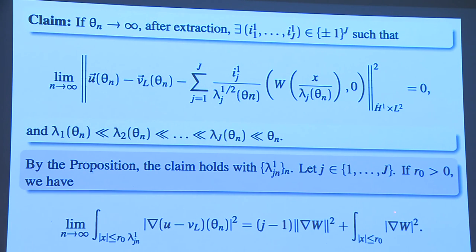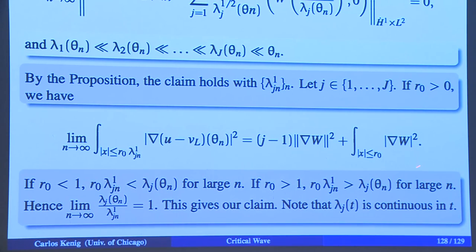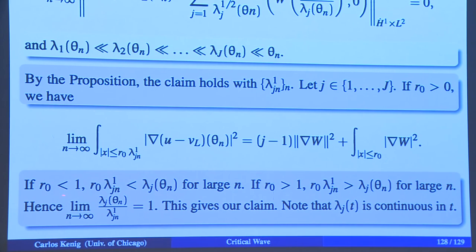The next claim: for any sequence theta_n going to infinity, after extraction I can have a decomposition with the lambdas given by the previous definition. Originally I had uncontrolled lambdas; now I can choose them. We know there's some sequence lambda_{j1n} for which this is true. I will show the lambda_{j1n}'s are comparable to lambda_{jn}, so I can swap one for the other. If R₀ is positive, by the decomposition this equals that. If R₀ < 1, by definition this has to be strictly smaller for large n; if R₀ > 1, this would be bigger for large n. Thinking about that carefully allows the recalibration.